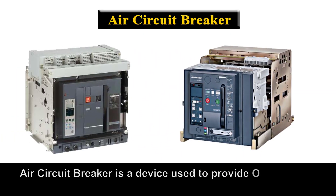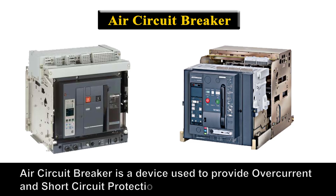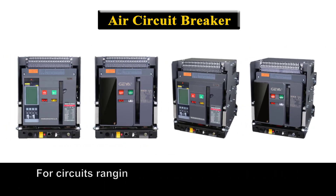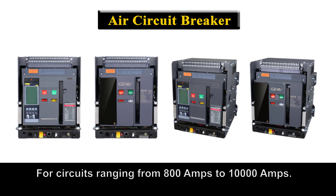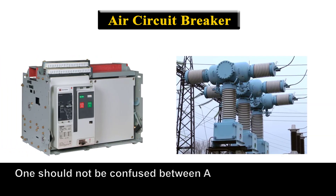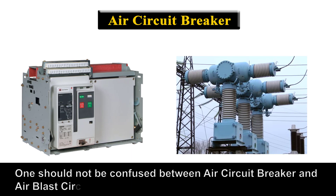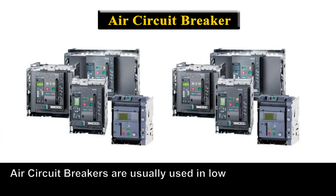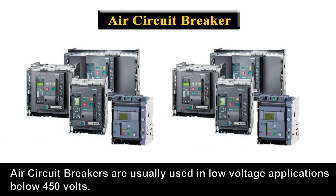An Air Circuit Breaker is a device used to provide overcurrent and short circuit protection for circuits ranging from 800 A to 10,000 A. One should not be confused between Air Circuit Breaker and Air Blast Circuit Breaker. Air Circuit Breakers are usually used in low-voltage applications below 450 volts.